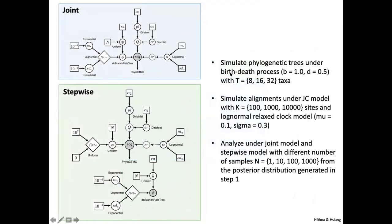We then did the same thing as with the toy example — we simulated a bunch of data. We simulated five trees under the birth-death process with taxa ranging from 8, 16, to 32 taxa. We simulated alignments under the Jukes-Cantor model with either 100, 1000, or 10,000 sites and used the log normal relaxed clock model. We analyzed these simulated datasets under both our joint and stepwise approaches, varying the number of posterior samples taken when moving from step one to step two.